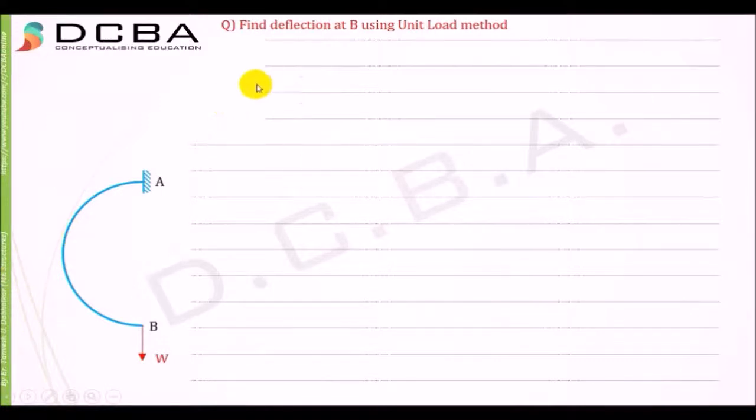We need to find the M0 equation first for primary structure. You can take a section at x, but since this is a semicircular beam, for these kinds of beams that are circular, semicircular, or quarter-circular, it is easier to work with polar coordinates rather than Cartesian coordinates.